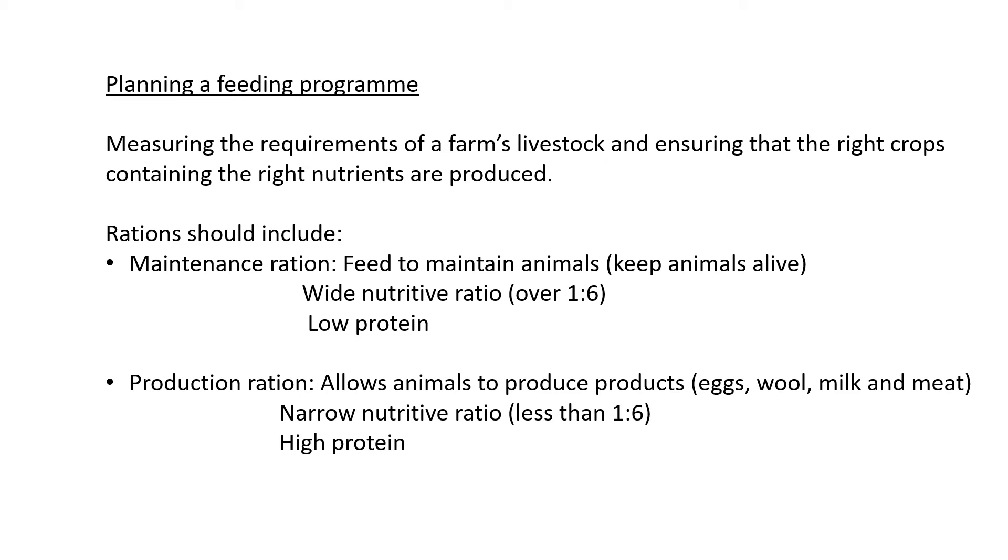There are two types of rations: maintenance ration and production ration. For maintaining the animal, it's just to feed them feed that keeps them alive. Your maintenance ration usually has a wide nutritive ratio over 1:6.